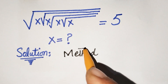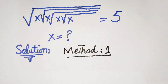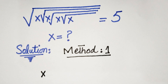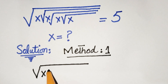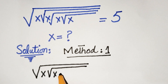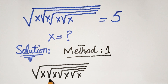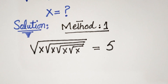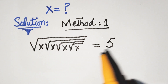In Method 1, we write out the expression as a nested square root: the square root of x, then square root of x, then square root of x, and then x — so we have 4 levels of x with square roots, equal to 5. We begin by squaring both sides.